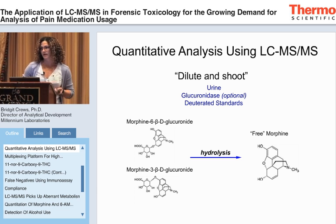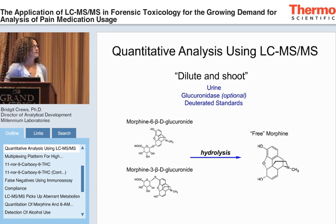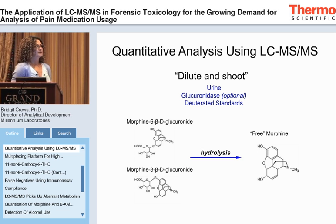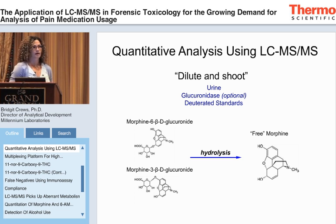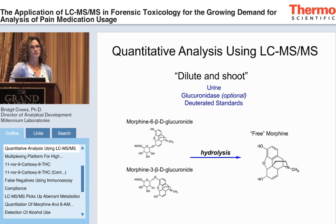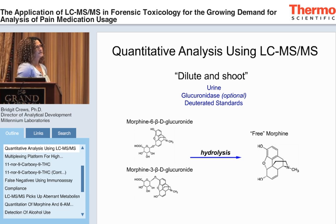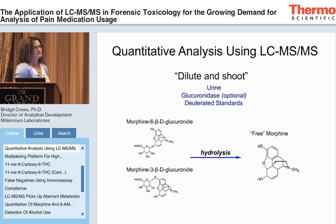We start with the simplest sample prep possible. We're screening urine samples, so we do a simple dilute-and-shoot where we just take the urine and dilute it with deuterated internal standards. You can also process it with glucuronidase to cleave off the sugar — that's an optional step. For example, morphine: if you don't hydrolyze it first, you have to analyze the 6-beta-glucuronide, the 3-beta-glucuronide, and the free form, or you add a little extra pre-processing time and only worry about the free form.